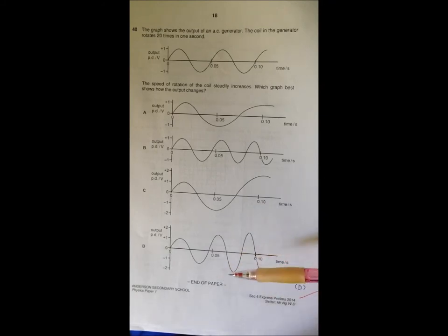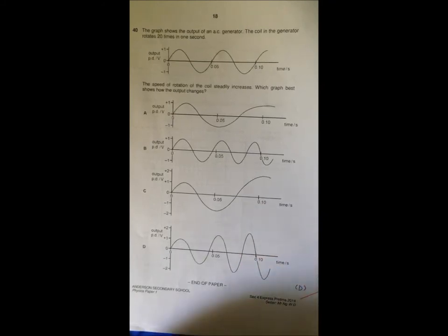If you look at all these four graphs, only D is having an increasing amplitude and increasing frequency, means that the wavelength will be shorter and shorter. So that's why D is your answer. Straightforward.